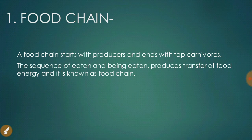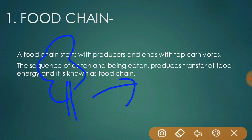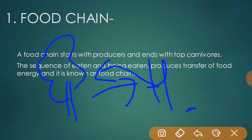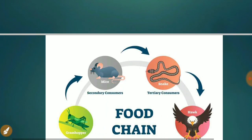A food chain starts with producers and ends with top carnivores. The sequence of eating and being eaten produces the transfer of energy and is known as a food chain. For example: plants convert solar energy into chemical energy through photosynthesis, then small herbivores consume the plant matter and convert it into animal matter, and these herbivores are then eaten by large carnivores.